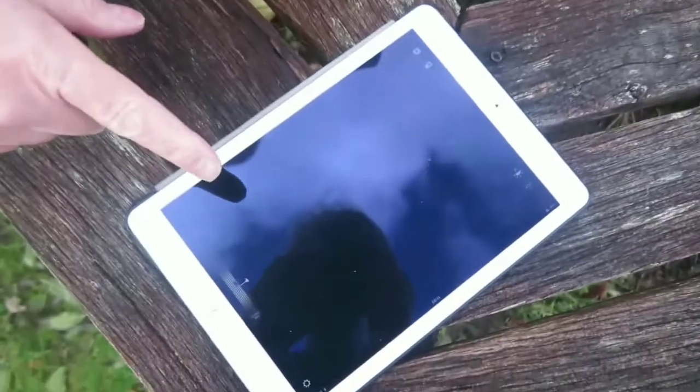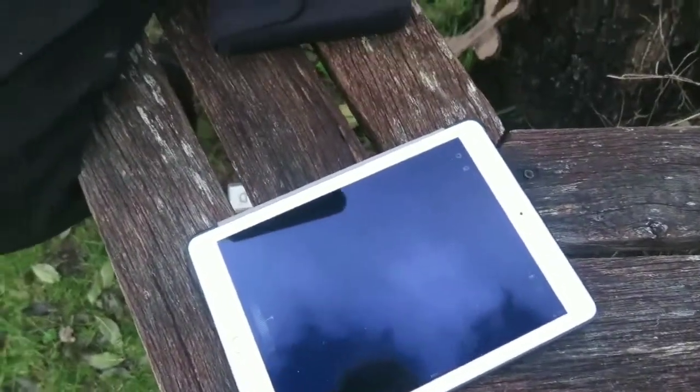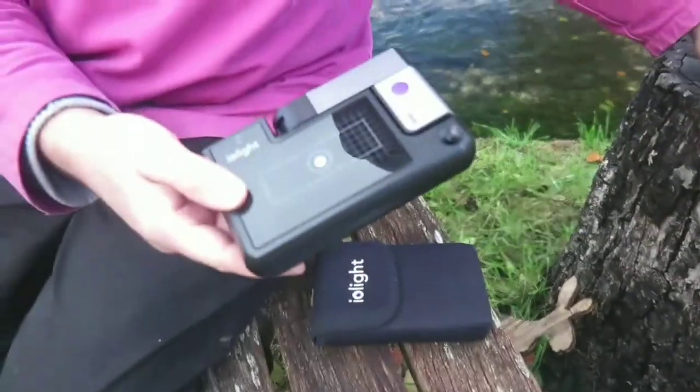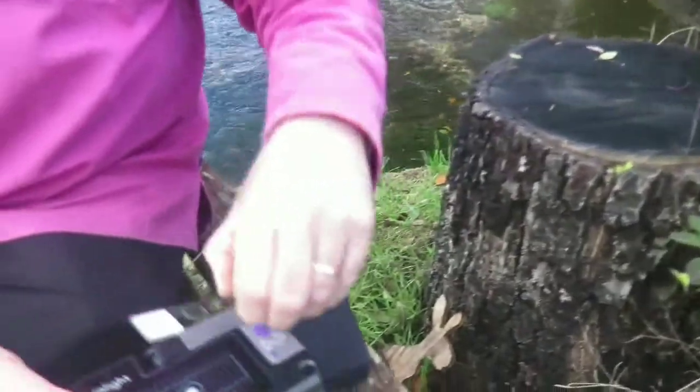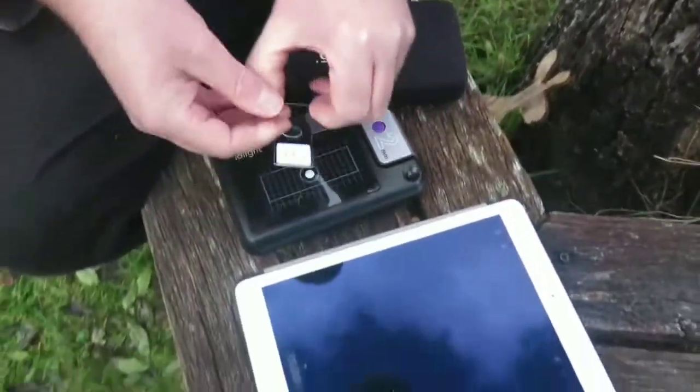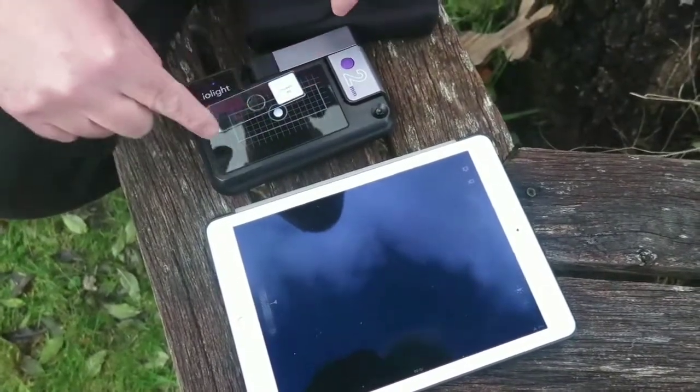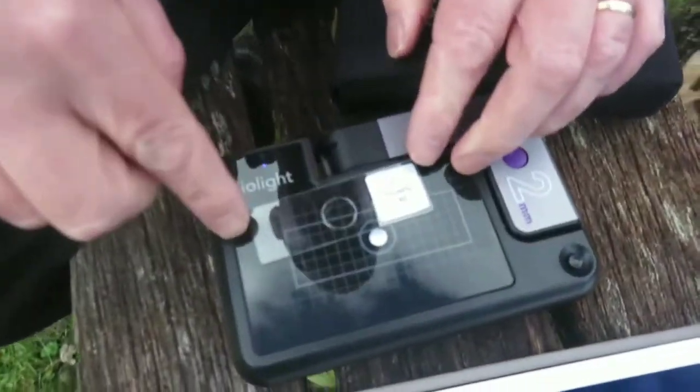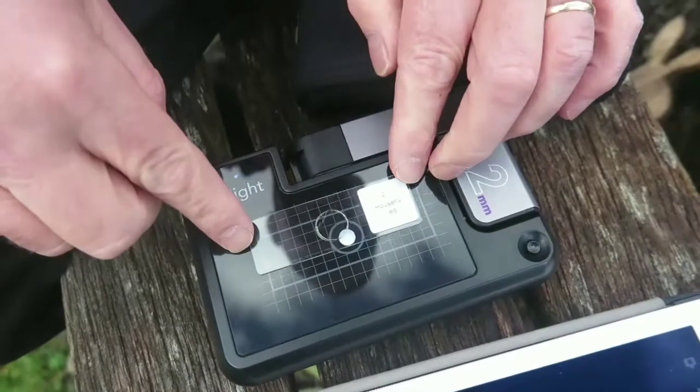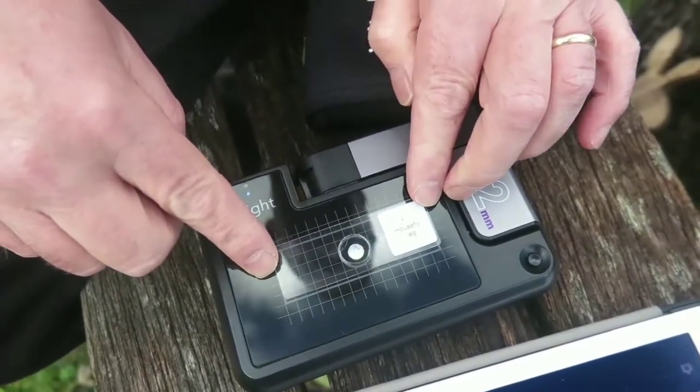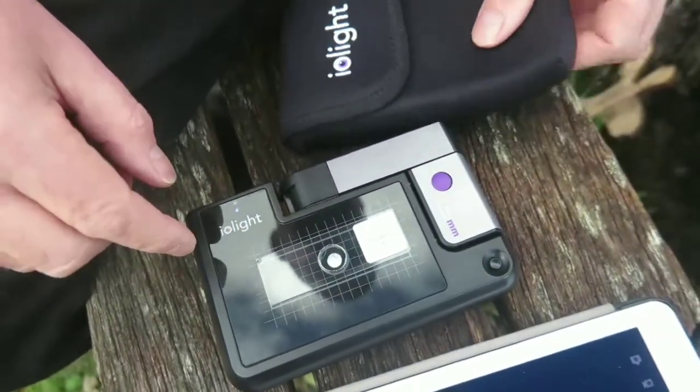This microscope is already coupled to the iPad so now I have to just find a slide. So here's my slide and that is going to go on the stage of the microscope. The microscope has a rectangle drawn on the stage so that it's very easy to tell where the slide should start. So that's your starting point.